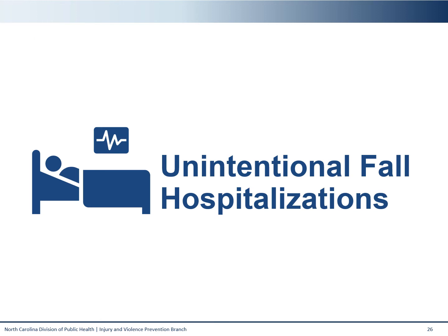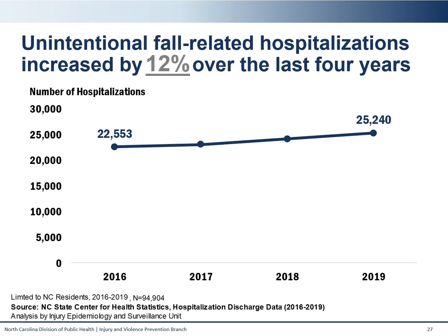Moving on, we will now share some data on trends in fall-related hospitalizations. Fall-related hospitalizations have also continued to increase, though not as rapidly as deaths. For hospitalization and emergency department data, we are only able to provide data as far back as 2016. Due to the ICD-10-CM coding structure changes, we cannot directly compare to years prior to 2015. Even over the last four years, fall-related hospitalizations are trending upward, with a 12% increase from just over 22,000 a year in 2016 to over 25,000 a year in 2019.